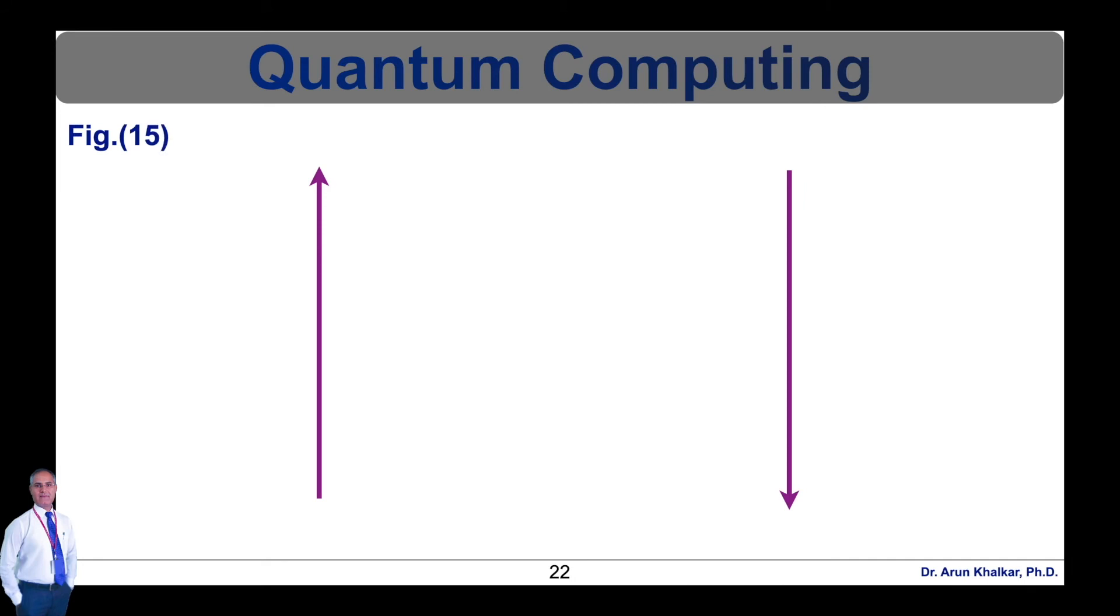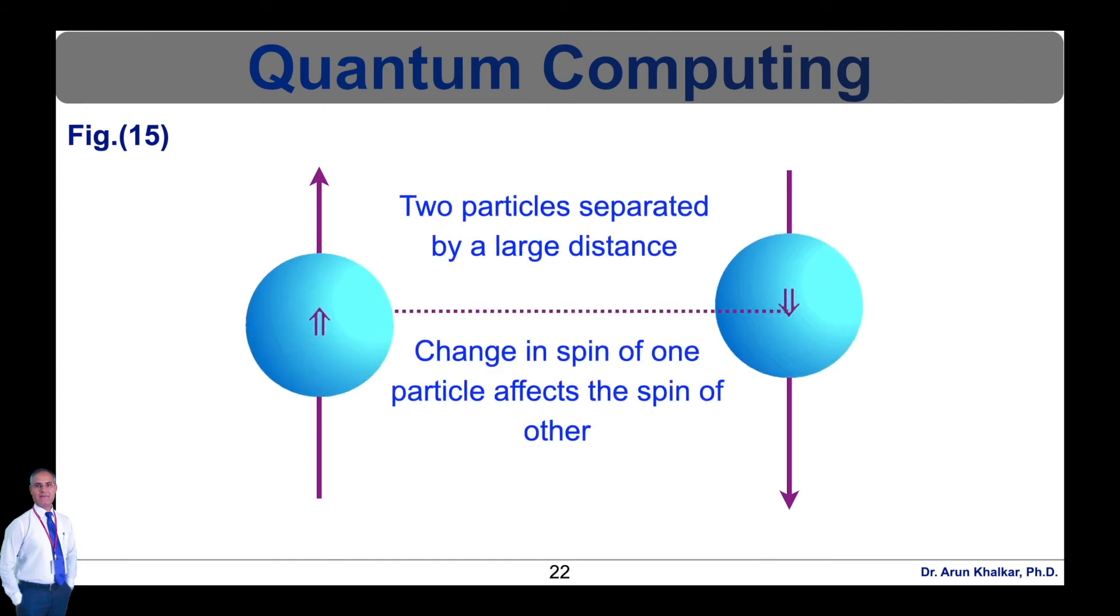Now, the second important parameter in quantum computing is entanglement. The entanglement is correlation between particles acting as qubits, such as photons or electrons. By knowing the spin state of one entangled particle, up or down, we can know the spin of its correlated particle. Quantum entanglement allows qubits separated by distances to interact with each other instantaneously. When multiple qubits act coherently, they can process multiple operations simultaneously.